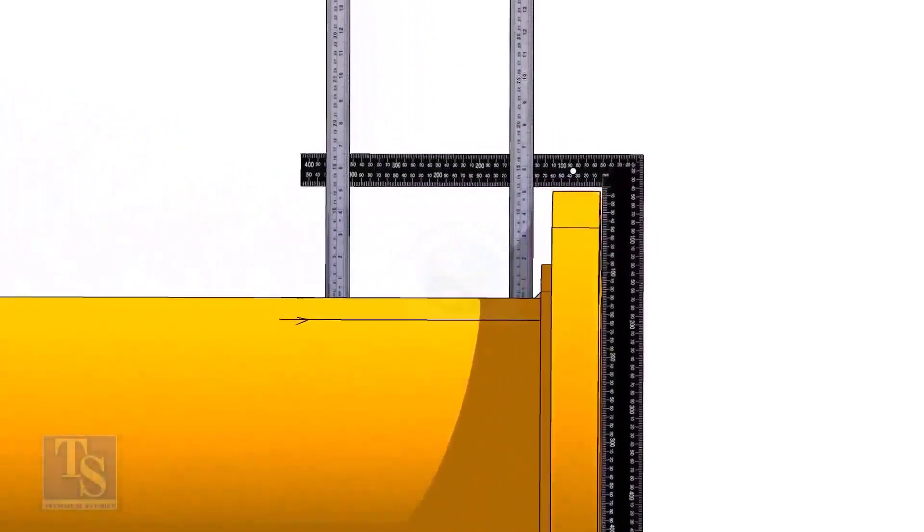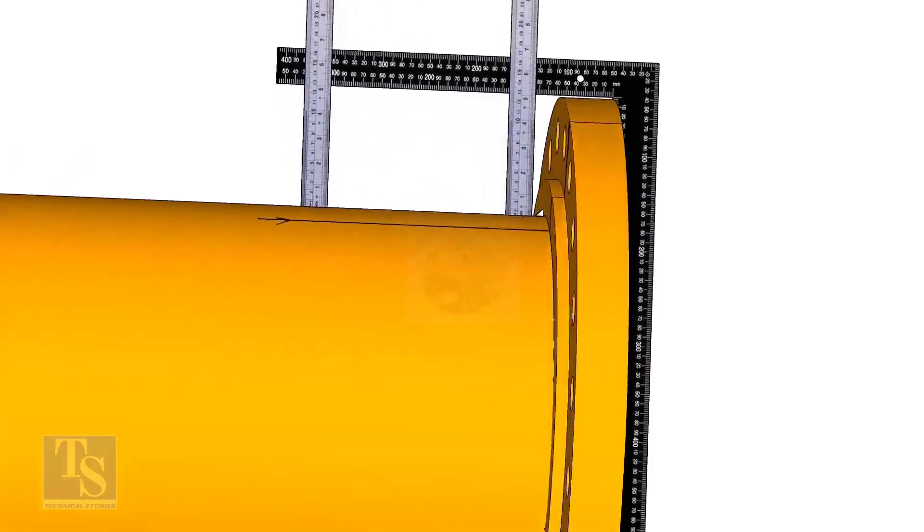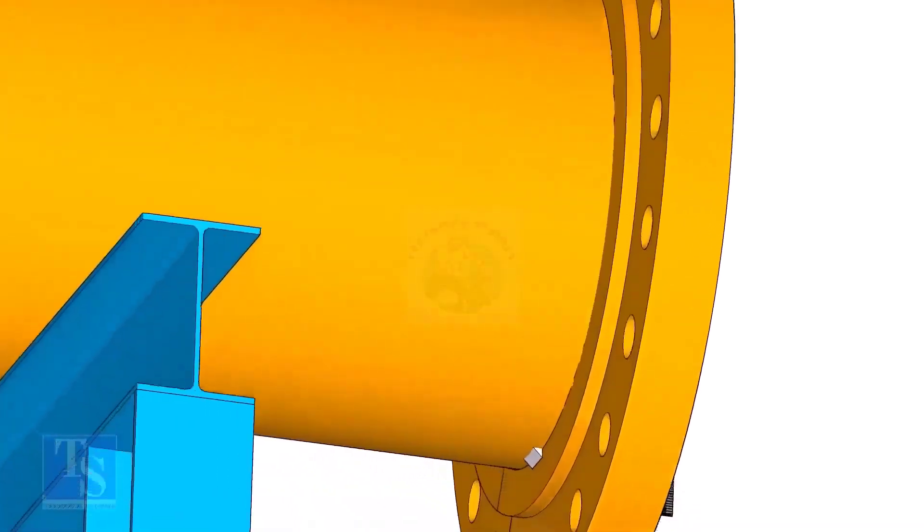Tack weld on the top of the pipe with the flange and check the squareness. If correct, tack weld at the bottom side also.